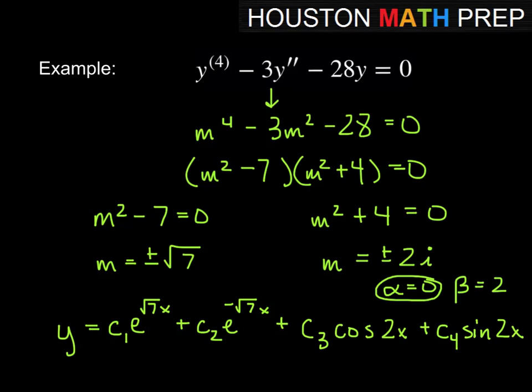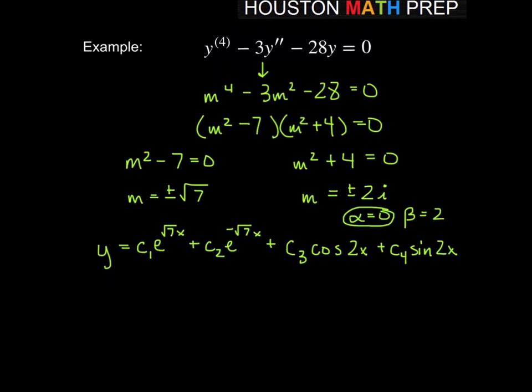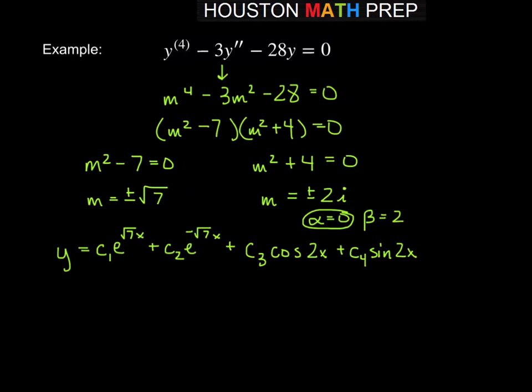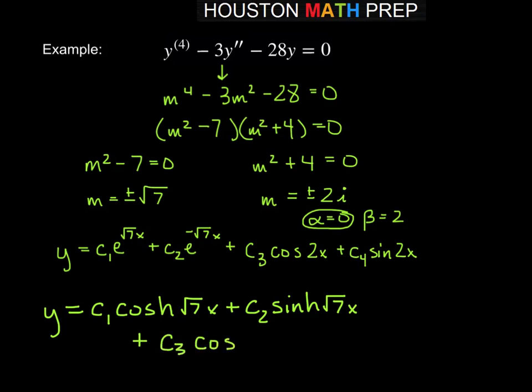And then it is possible we could rewrite the first two solutions because we did have a difference of squares we're solving there. So technically, you may see this c1 hyperbolic cosine root 7 x plus c2 hyperbolic sine root 7 x plus c3 cosine 2x and we're just keeping the other two terms plus c4 sine of 2x.